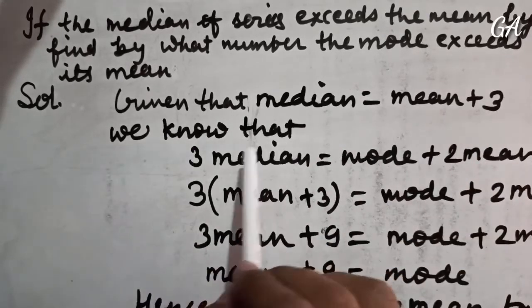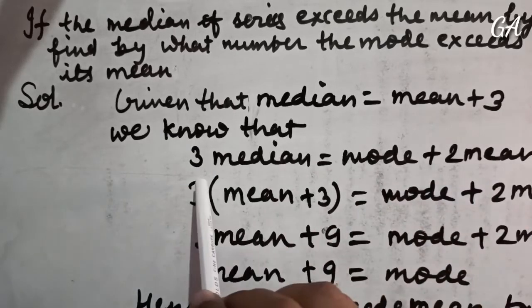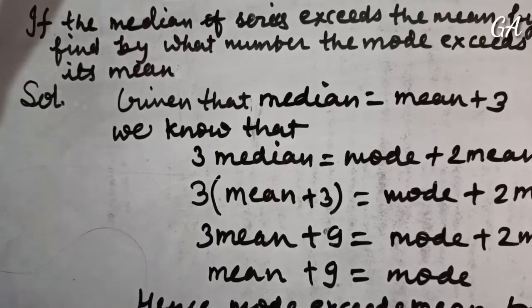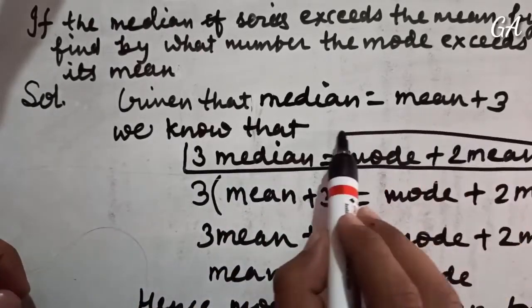We know that 3 median equals mode plus 2 mean. This formula is the main formula for this question. This formula will solve this question.